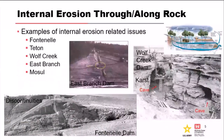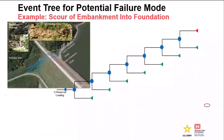Internal erosion case histories include Fontenelle Dam, Teton, Wolf Creek, East Branch, and Mosul. Teton was the only one that technically failed. This photo shows significant karst systems that developed at Wolf Creek, with ongoing efforts to treat and mitigate those — TVA has a lot of complicated karst projects. Fontenelle had erosion issues in the abutment as well. Mosul is a really interesting case history with fascinating presentations from Georgette and others in AEG.